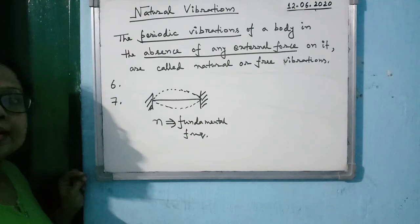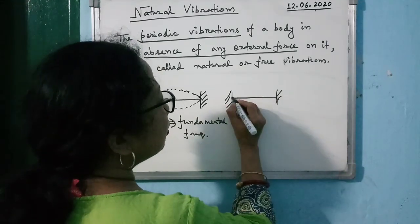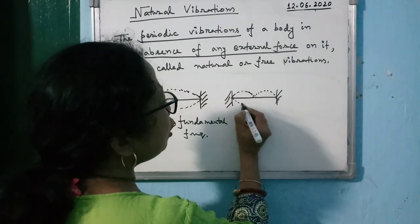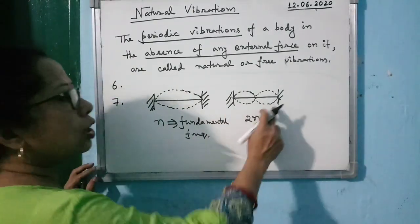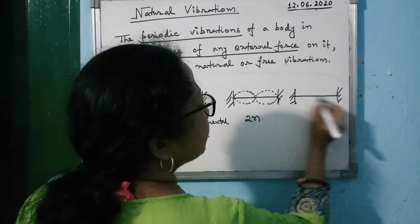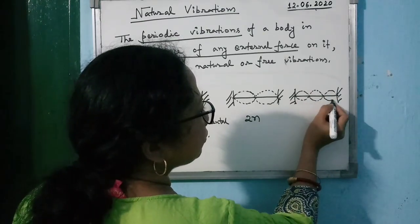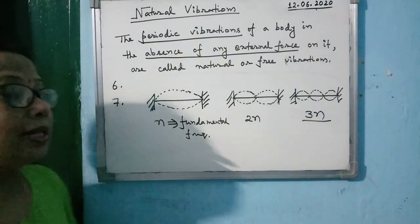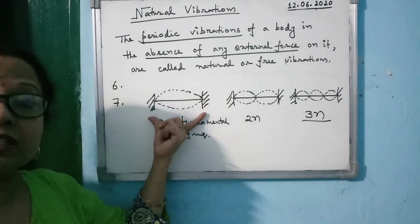In the next mode of vibration, the string vibrates making two loops — the frequency is 2N. In the mode after that, the string vibrates making three loops — the frequency is 3N. So for a string fixed at both ends rigidly, the modes of vibration correspond to one loop (fundamental), two loops, three loops, and so on.